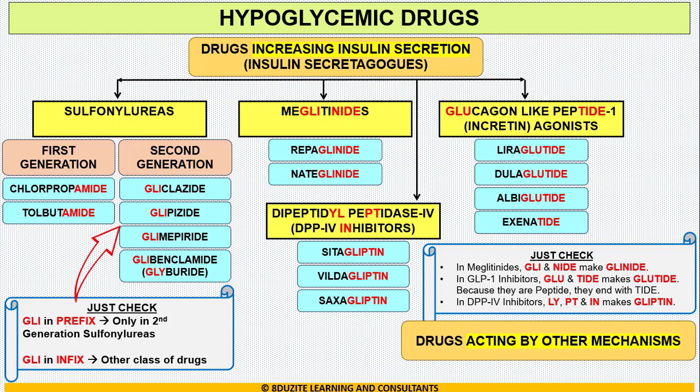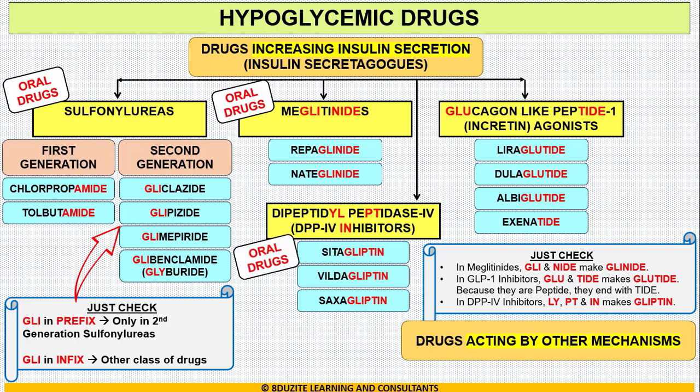Before moving forward — which of these drug categories are given orally and which parenterally? Sulfonylureas, meglitinides, and DPP-4 inhibitors are oral drugs, but glucagon-like peptide-1 agonists are parenteral drugs. Any drug ending with the letters T-I-D-E — tide — will be a parenteral drug.